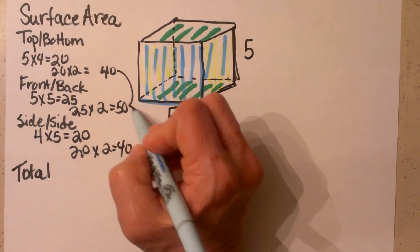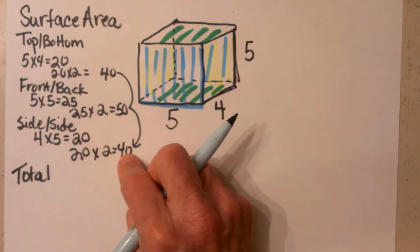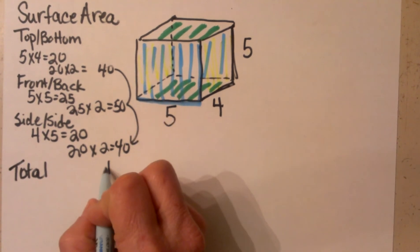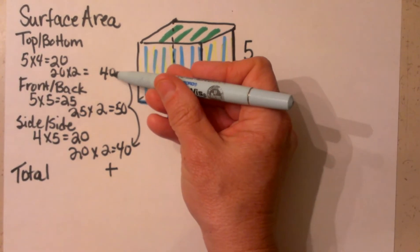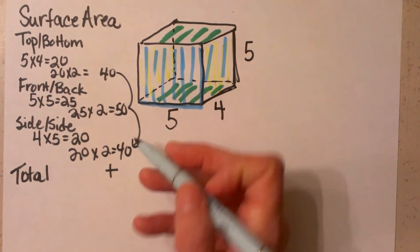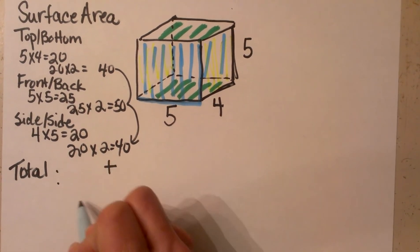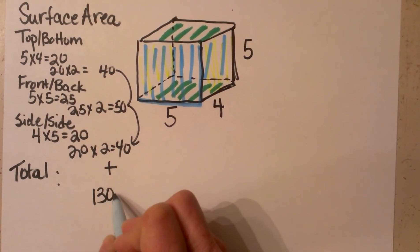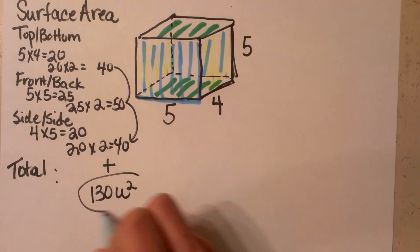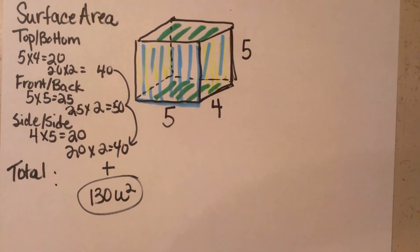Then I am going to take these three products and add them up to get the total surface area. So 40 plus 50 is 90, and 90 plus 40 is 130 units squared. And that is how you find the surface area of a prism.